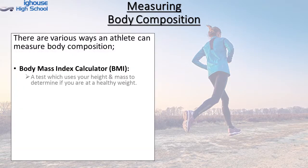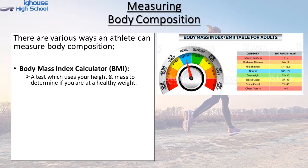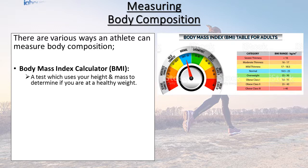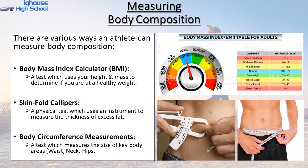Body composition — measuring the ratio of fat to non-fat within the body — can be measured in a variety of different ways. The first is the Body Mass Index Calculator, or BMI, which is a calculation using your height and weight to determine whether you're at a healthy weight. Another method is skinfold calipers, which uses an instrument to measure the thickness of excess fat at key areas within the body. And lastly, we have body circumference measurements, which measures the size of key body areas such as the waist, the neck, and the hip area.